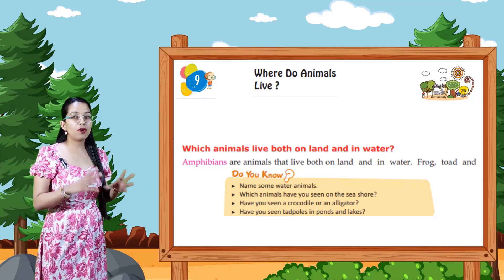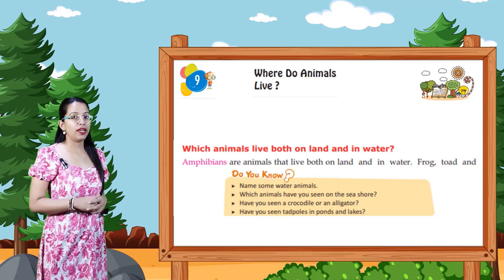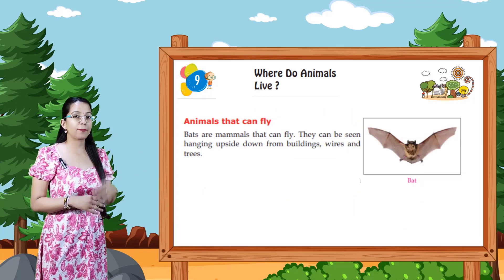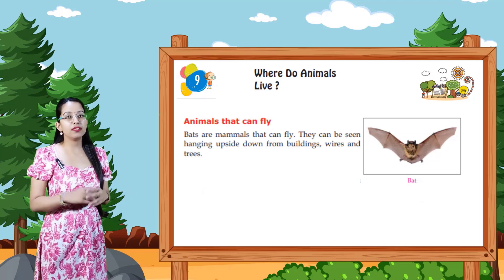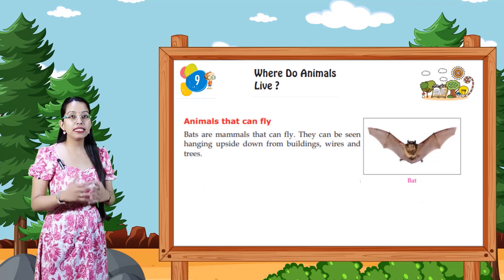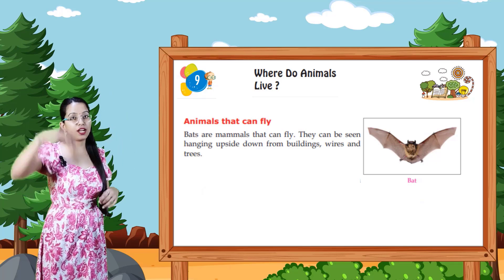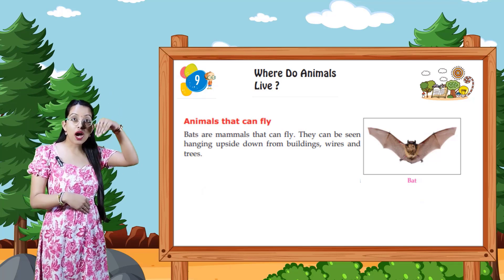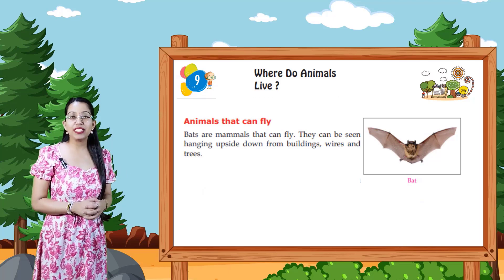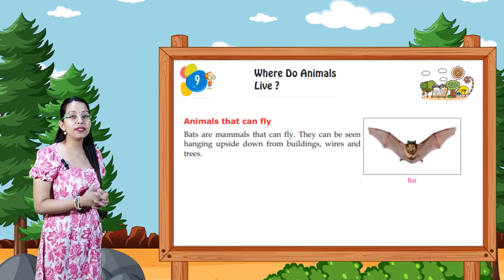Have you seen a crocodile or an alligator? Have you seen tadpoles in ponds and lakes? Our next topic is animals that can fly. Bats are mammals that can fly. They can be seen hanging upside down from buildings, wires, and trees.